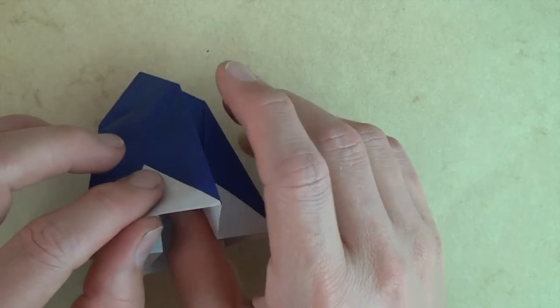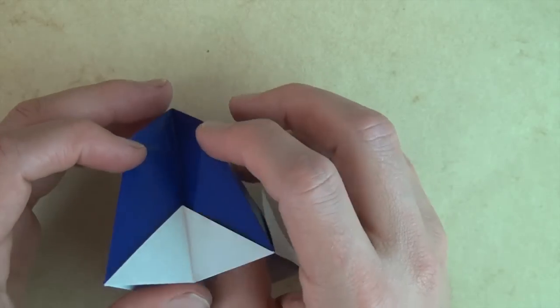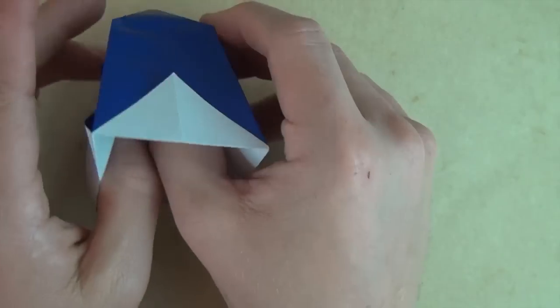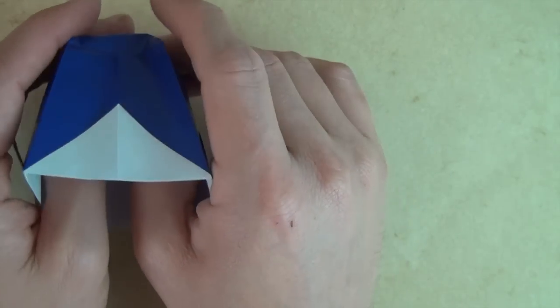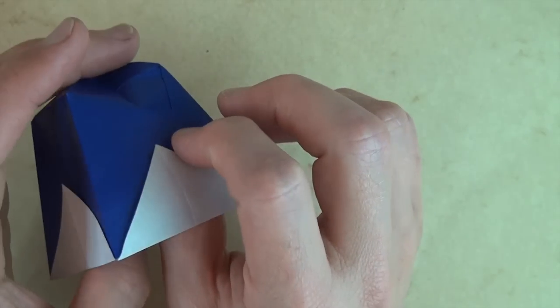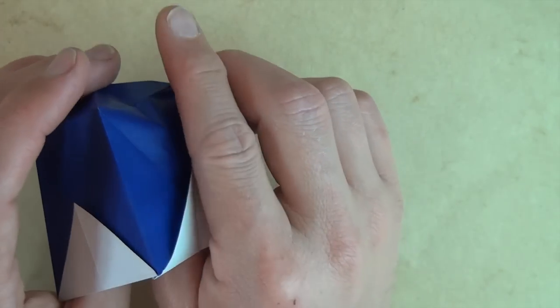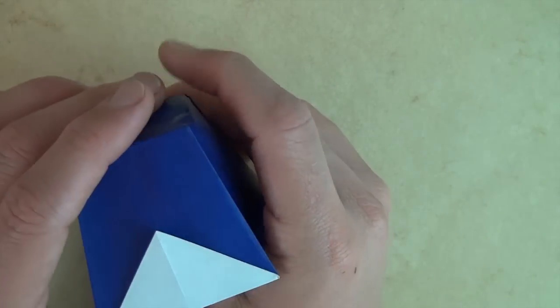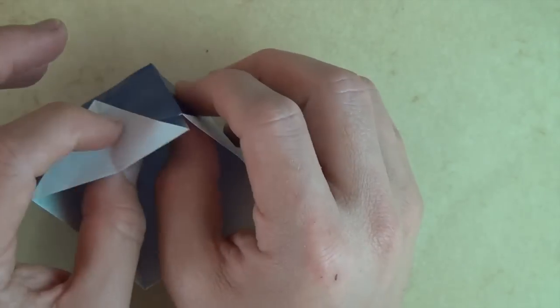And now you can open the box up and just put your fingers in and spread it out. Try to keep these flaps contained underneath the flap like this. And just shape it. Just press it down like this.